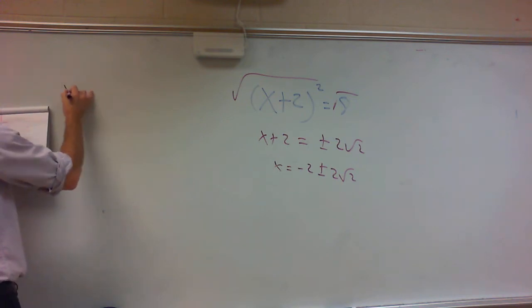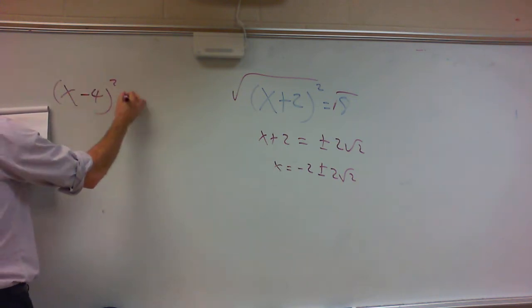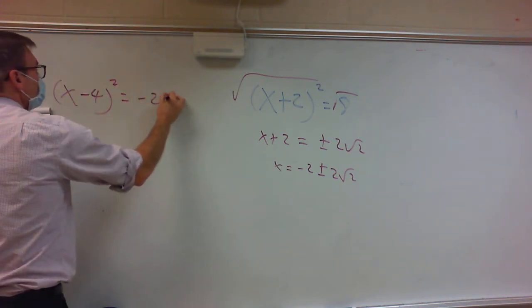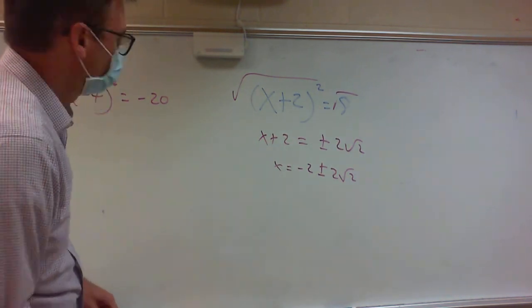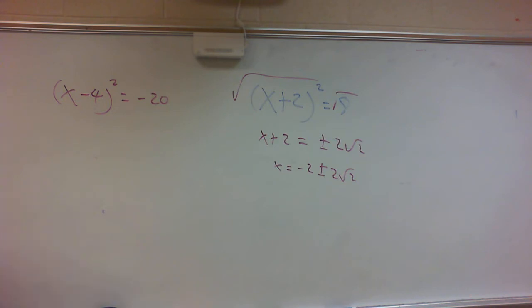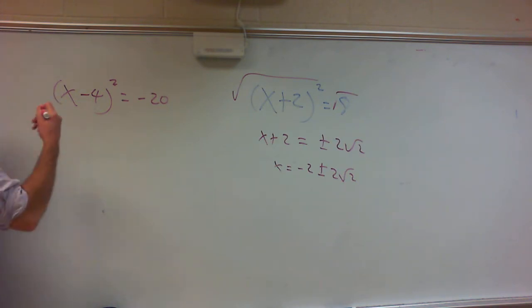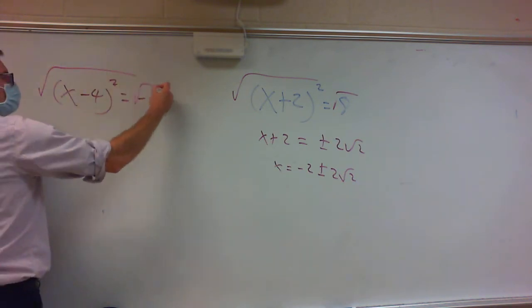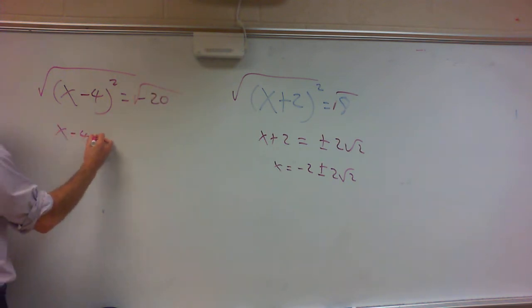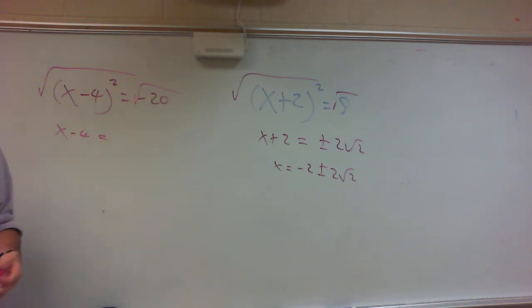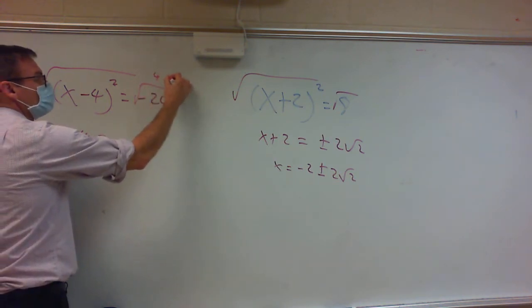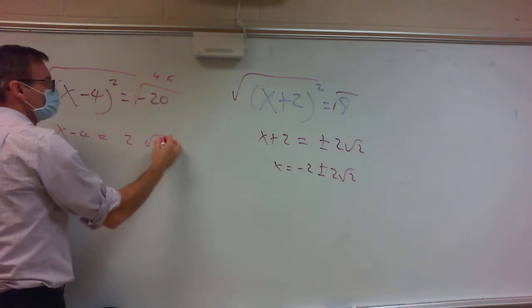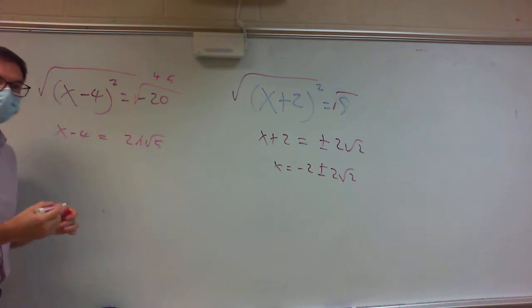What if I gave you x minus 4 squared equals negative 20? Solve this — you're doing the exact same thing. If I take the square root of both sides, that gives me x minus 4. Square root of negative 20: we know it's got an i. 20 is 4 times 5, so I end up with 2 square root of 5, with an i in the middle.